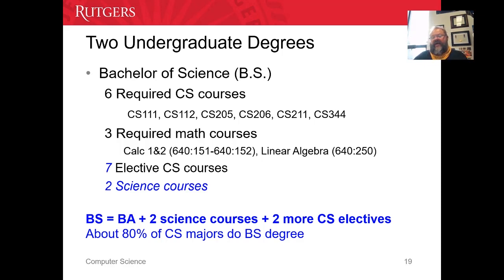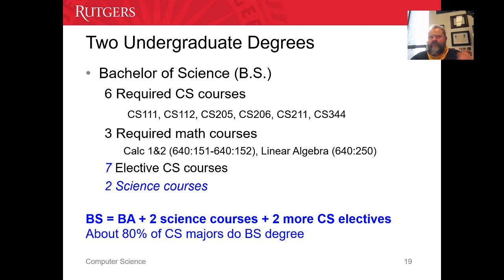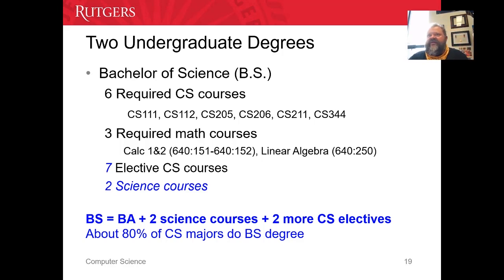So at the end of the day, the difference between the Bachelor of Science and the Bachelor of Arts is four classes — 18 classes to complete the BS as opposed to 14 to complete the BA. Now, in the real world, it used to matter more — 30 years ago when I was going to school, you would get better programming jobs and more technical jobs with a BS.